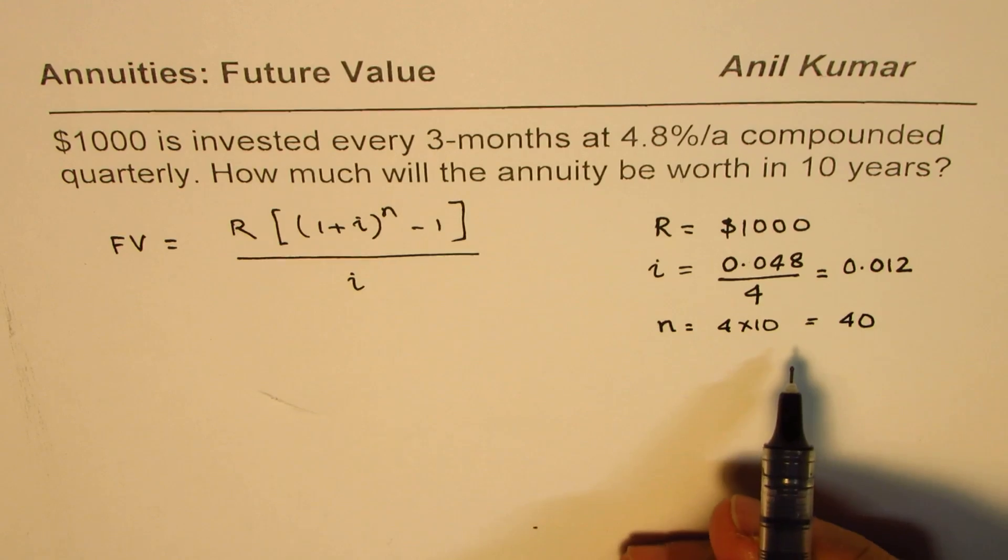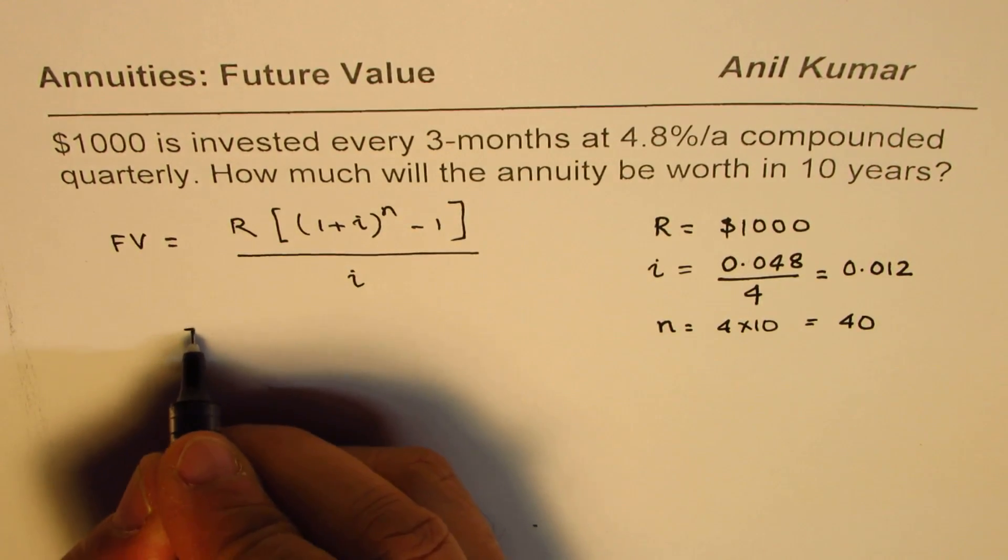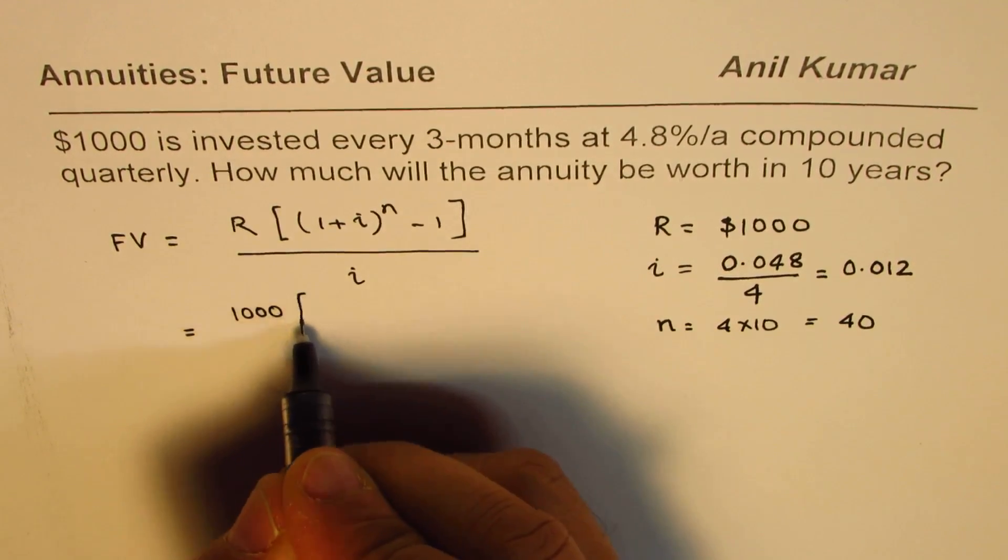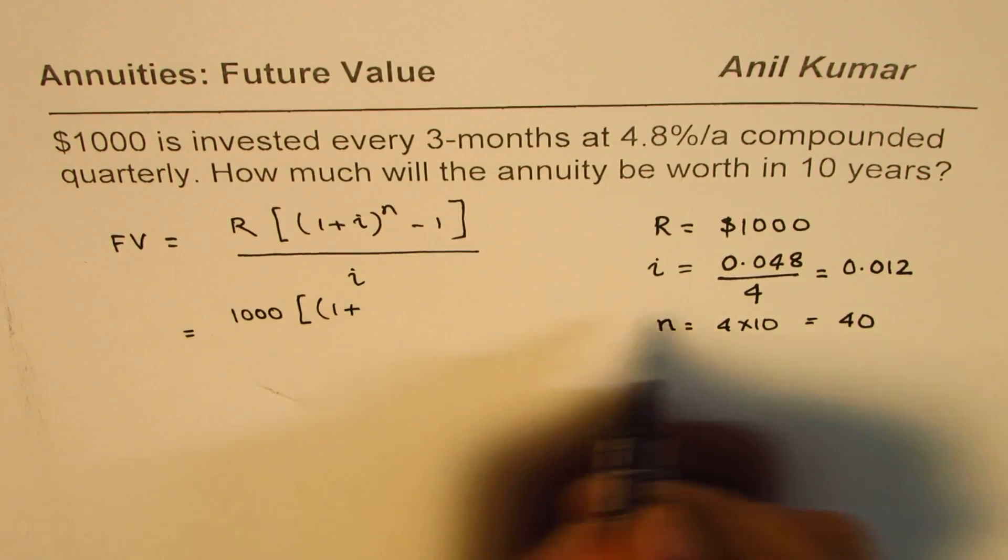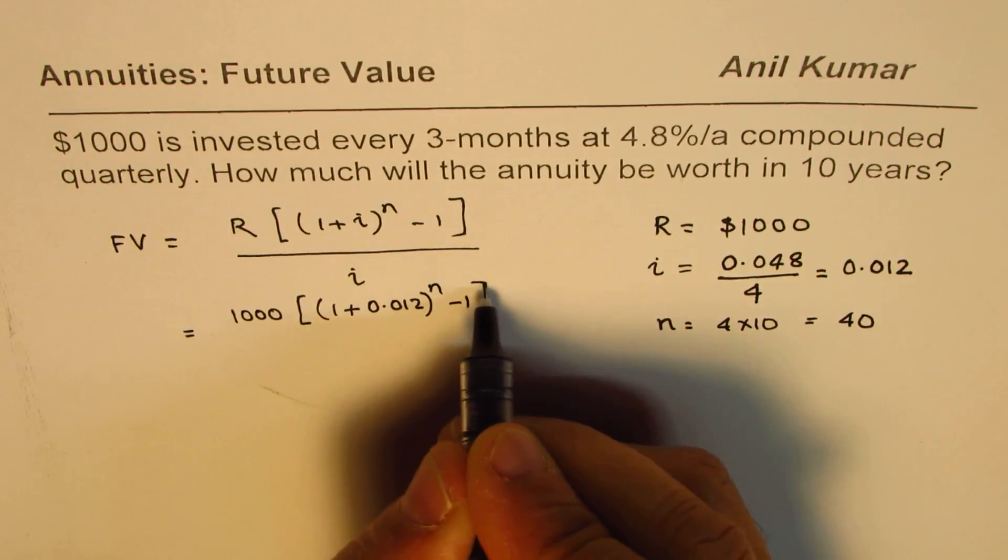These are the values which you have to substitute and then calculate. So we can say future value will be 1000[(1 + 0.012)^n - 1] divided by 0.012.